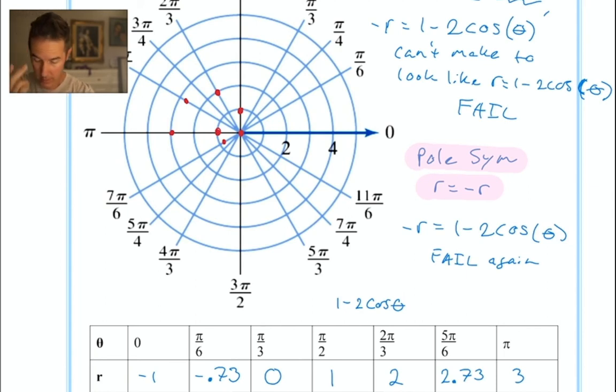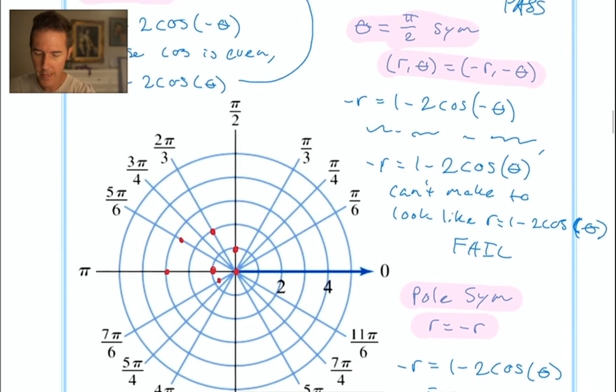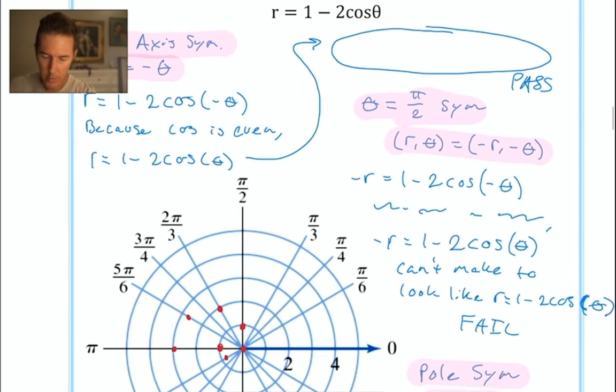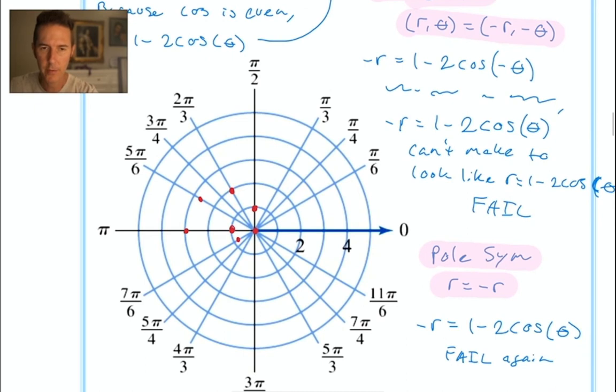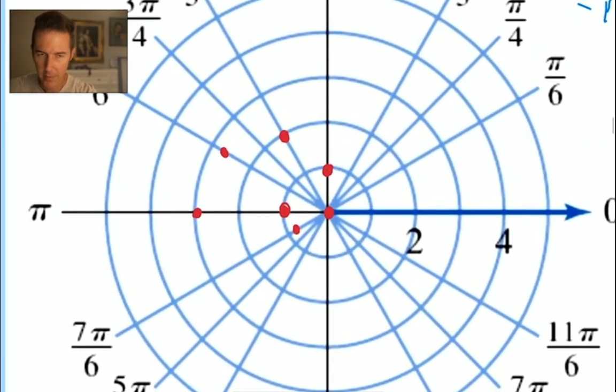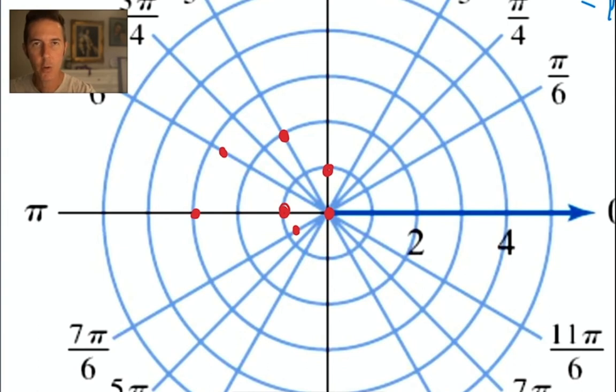Next I'll use the fact that our graph passed the polar axis symmetry test, which means I can reflect each point over the horizontal axis. I have this technique: I plot reflected points with open circles to distinguish them from the original plotted points.